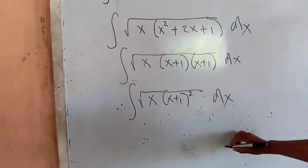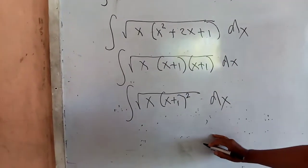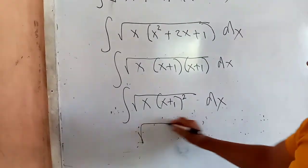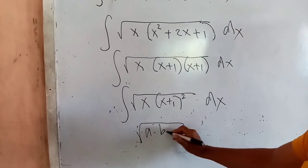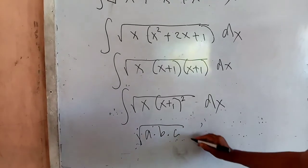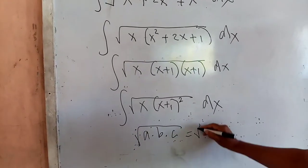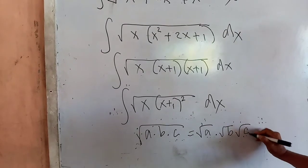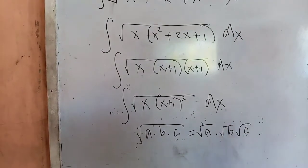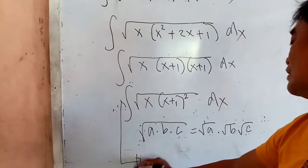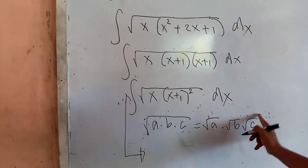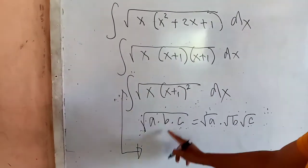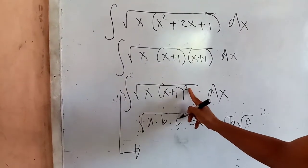Note that in your algebra, the law of radicals says that the square root of a multiplied by b times c will be expanded as the square root of a, times the square root of b, multiplied by the square root of c. To use this definition, we let a equal x, and b equal (x plus 1) squared.